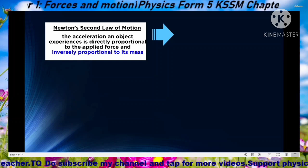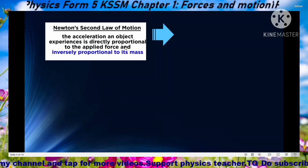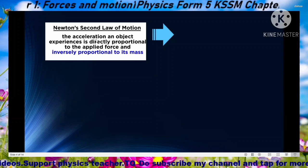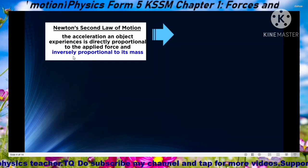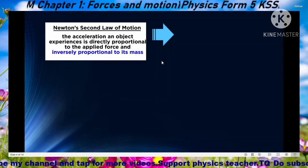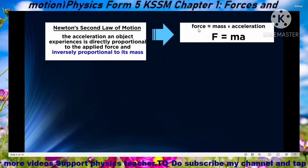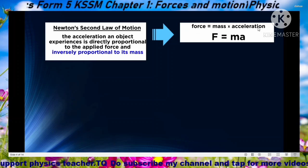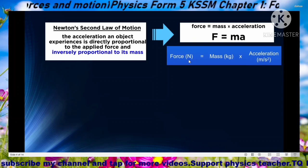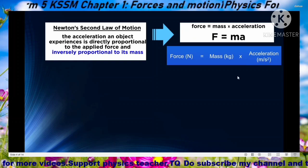Newton's second law of motion states: the acceleration an object experiences is directly proportional to the applied force and inversely proportional to its mass. There are two relationships: acceleration and force, and acceleration and mass. This can be written as the formula: Force equals mass times acceleration, or F equals MA. The unit of force is Newton, mass is kilogram, and acceleration is metres per second squared.